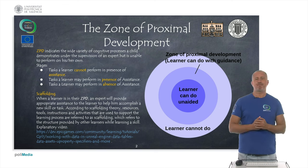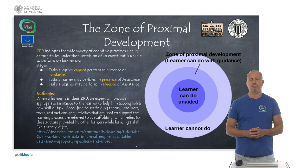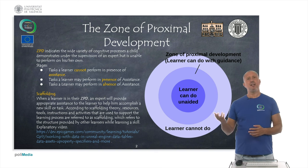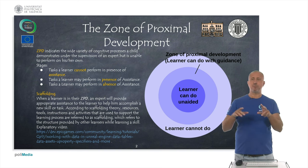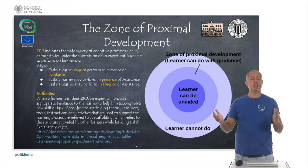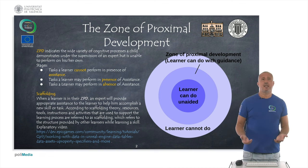This is the zone of proximal development. You can see there are three circles. The outer circle represents the things I cannot do, even with help. The middle circle is where I might reach my objective with the help of a more knowledgeable other, who can be a teacher, a parent, an adult, a friend, or — more interestingly from the project perspective — a peer. The center is the things I already know and already master.